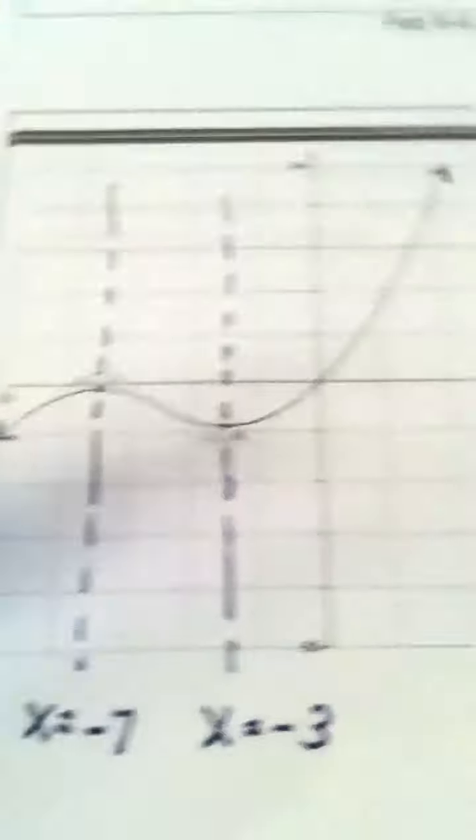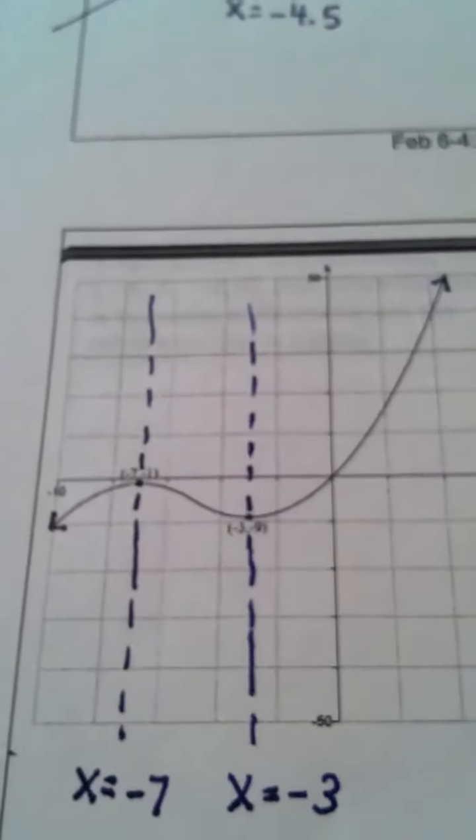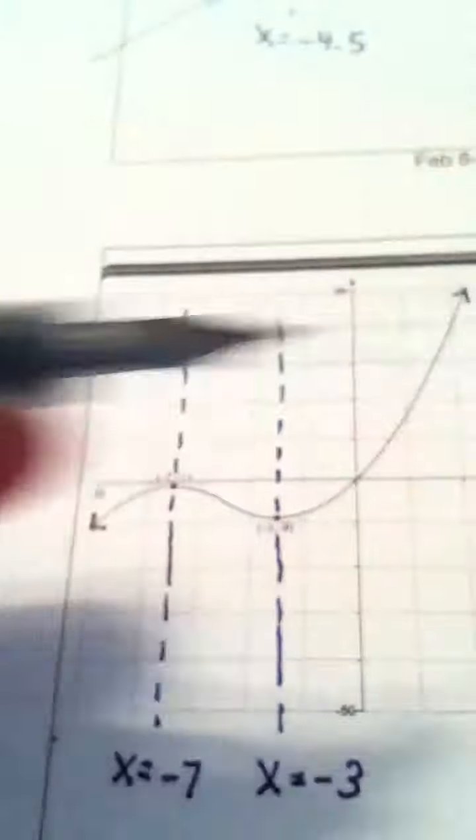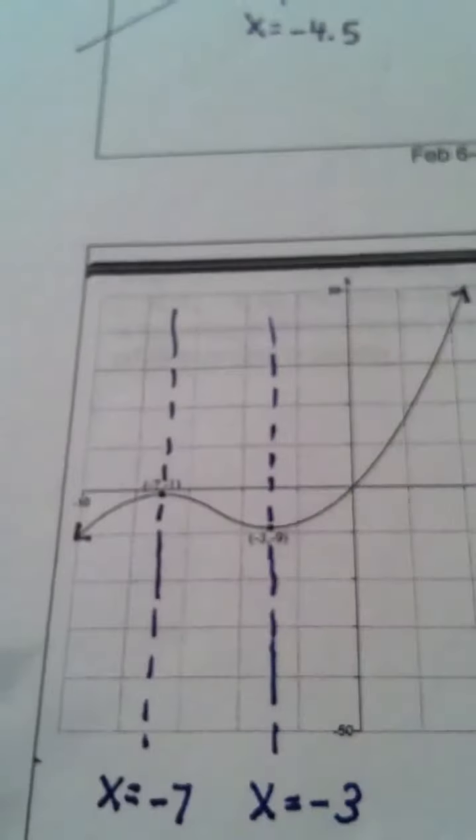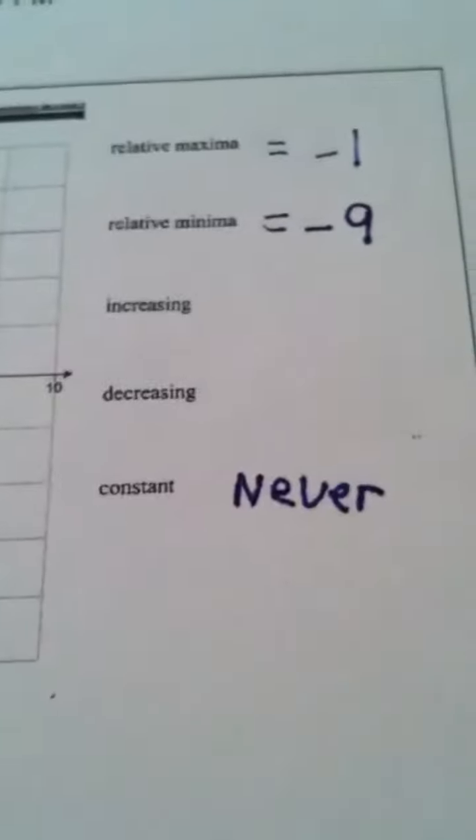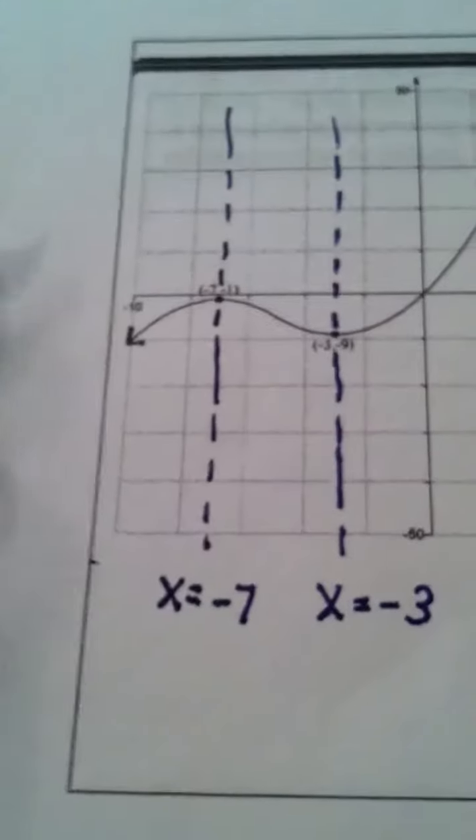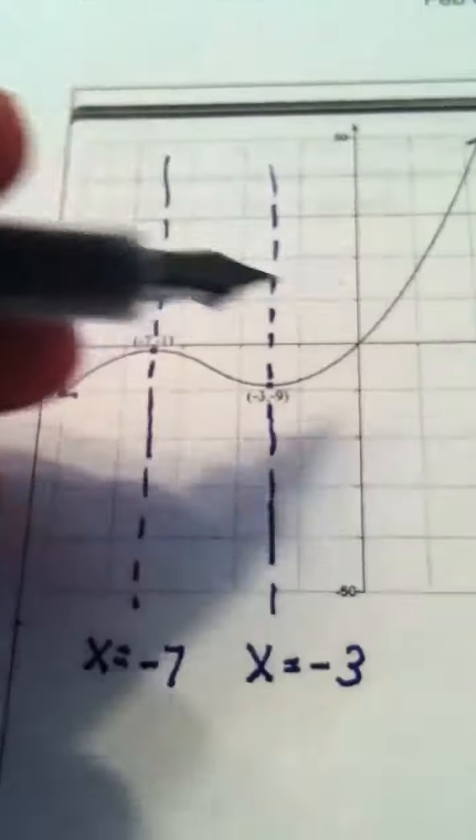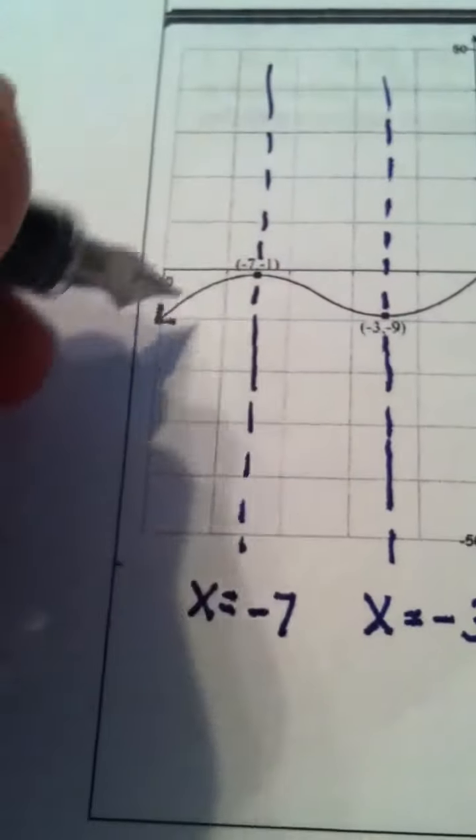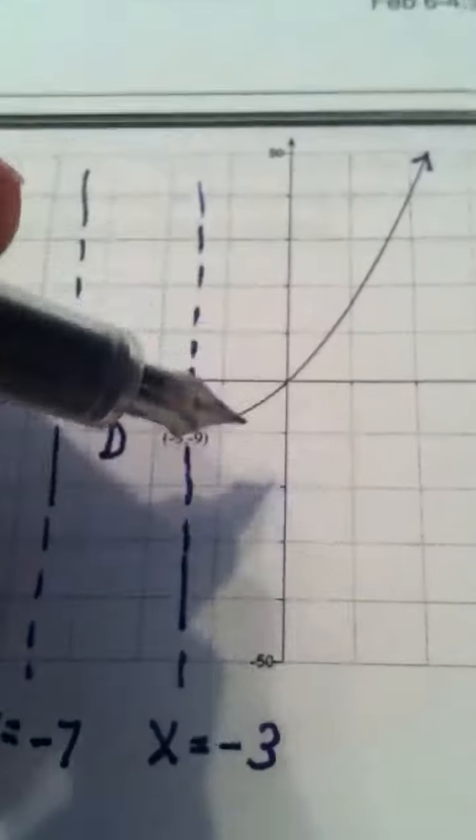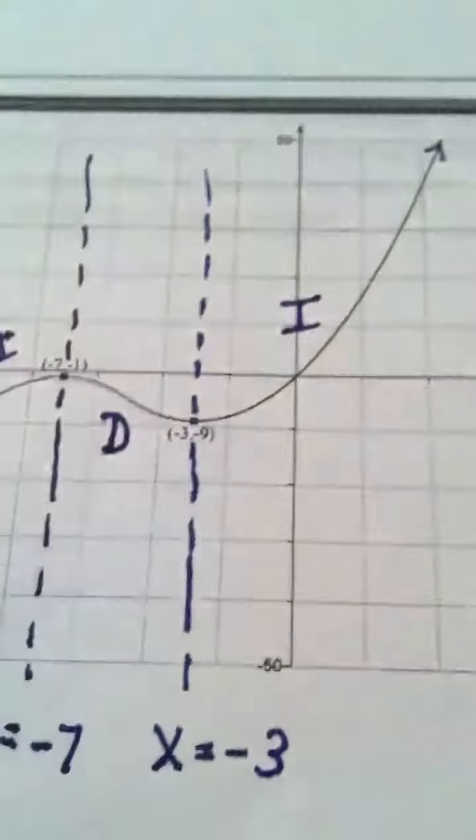Now, one thing I hope you can see with this graph is there's no place where the graph is just completely level. You know, that it's not flatlined. So where it says constant, we're going to put never. It's never constant. Okay, increasing and decreasing, we're going to answer over the intervals that we see. This interval is increasing. This little piece is decreasing. And then the rest of the graph is increasing.